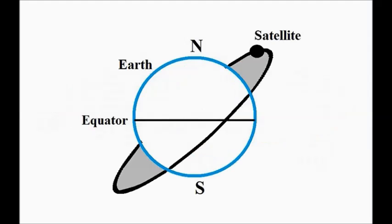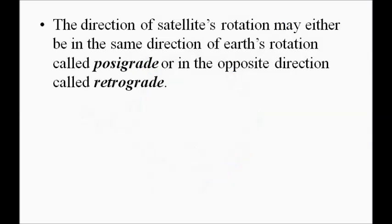The direction of the satellite can either be in the same direction as the Earth's rotation, which is called posigrade, or in the opposite direction, which is called retrograde.